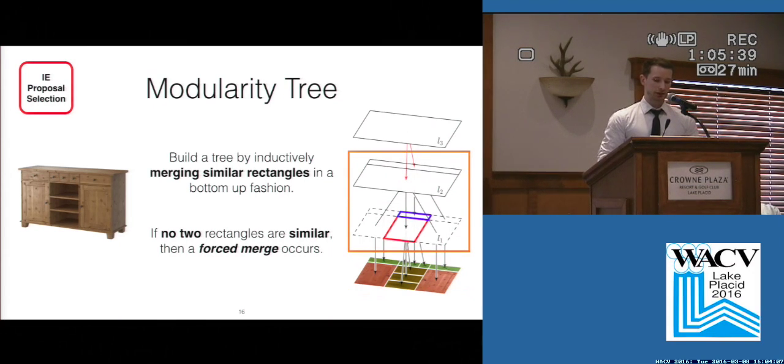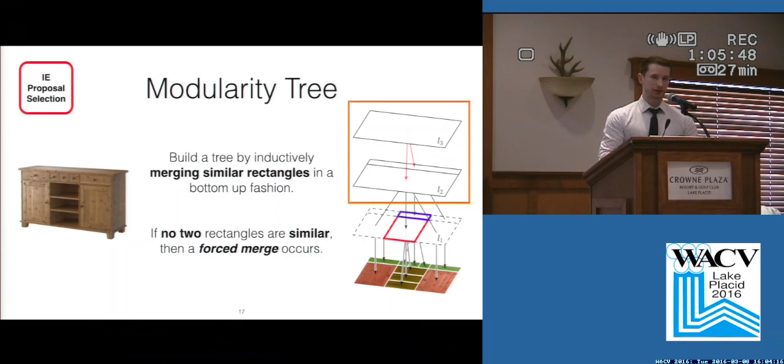Then we merge the red rectangles with the doors and the blue rectangle with the larger doors. But then we get a problem because there are no more similarly-sized rectangles. To proceed to the next layer, we do a forced merge. The number of forced merges in the modularity tree is a global indicator for how modular any selection of rectangles is, and we use this in our energy function.